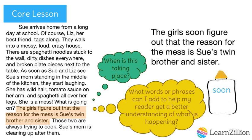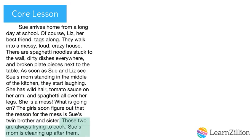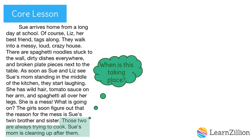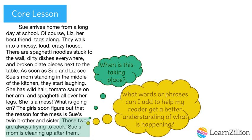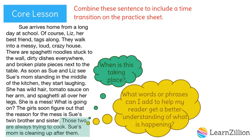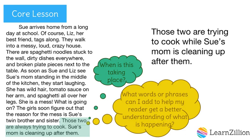I used a transition to show how quickly the girls determined what was happening. And just like the first example, I added the transition between the subject and the predicate — I could have also included it before the subject. We have another chance to combine two sentences: 'Those two are always trying to cook. Sue's mom is cleaning up after them.' They are happening at the same time, so I could combine these sentences. Your job is to revise this sentence to include a transition on the practice sheet. Pause the video and press play again when finished. Let's compare: 'Those two are trying to cook while Sue's mom is cleaning up after them.' I used 'while' to show both things are happening at the same time.